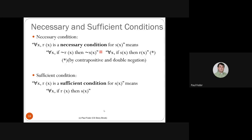We also defined necessary and sufficient conditions. 'R(X) is a necessary condition for S(X)' means 'for all X, ¬R(X)→¬S(X),' which by contrapositive is equivalent to 'for all X, S(X)→R(X).' So R(X) necessary for S(X) means S implies R. Sufficient condition: 'R(X) is sufficient for S(X)' means R(X)→S(X).